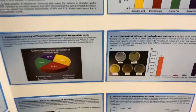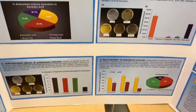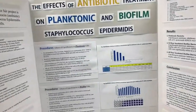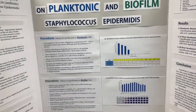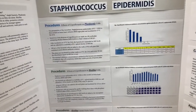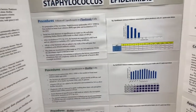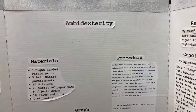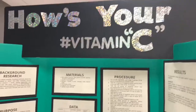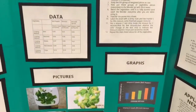This looks like a pretty detailed experimental project. Here we have 'The Effects of Antibiotic Treatment on Planktonic and Biofilm Staph Epidermidis.' Then 'Ambidexterity' with a couple of graphs. The next project is 'How's Your Vitamin C?'